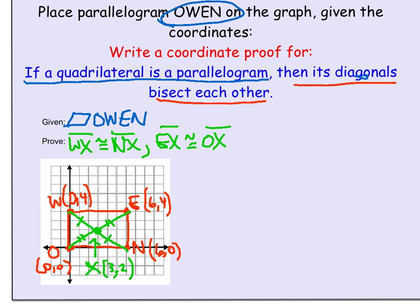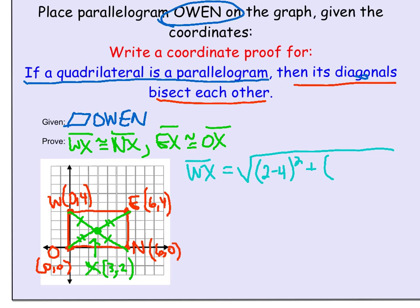In order to actually do the proof, you're going to find the length of each of these four segments, and hopefully what you'll find is that they are, in fact, equal. In order to find the length, we are going to use the distance formula. We are going to start with finding the distance from W to X. Using the distance formula and the points (0, 4) and (3, 2), we get √((2−4)² + (3−0)²). Two minus 4 is −2; squared gives 4. Three minus 0 is 3; squared gives 9. Add those together and it's √13.